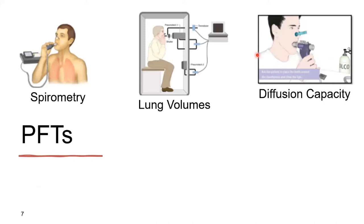To measure the functional impact of these lung diseases, pulmonary function testing is frequently used. This may consist of several tests done in the pulmonary function lab. The most common is spirometry, where the patient has a nose clip on and breathes in and out through a mouthpiece. After breathing normally, you take in as deep a breath as you can and then blow it out as hard, fast, and long as you can. This measures obstruction to airflow, frequently used in asthma, COPD, or bronchiectasis. It's important to give a very good effort to get an accurate measurement.